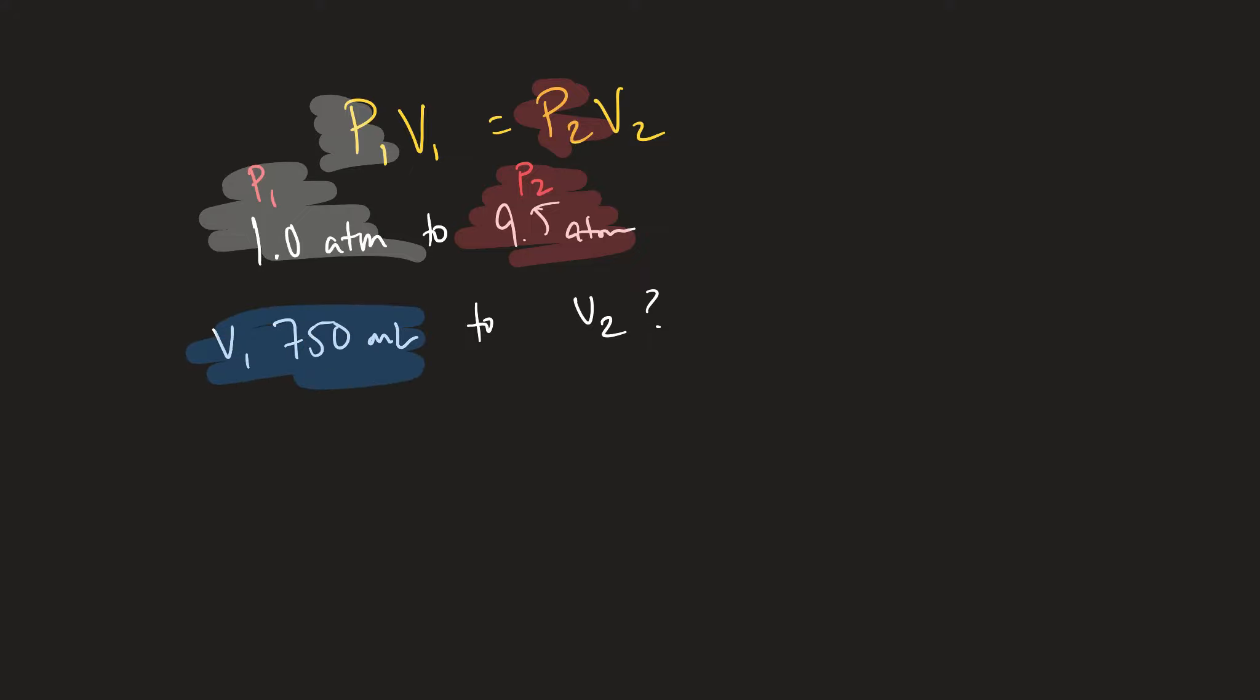This is your first volume V₁, and so now we're looking for volume 2, V₂. So this is what we're looking for. We could go ahead and set this up accordingly. If we're solving for V₂, then I would say that V₂ equals P₁ times V₁ over P₂.